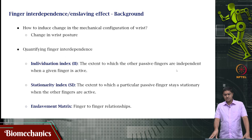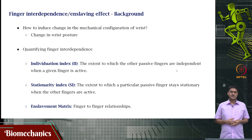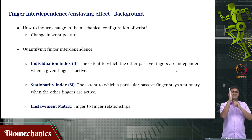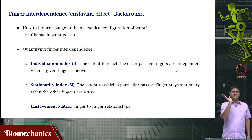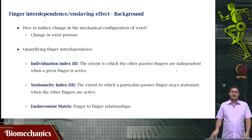How do you cause a change in the mechanics of the wrist — essentially, how do you stretch the flexors or extensors? Simply change the wrist posture. You can perform finger movements in a neutral posture, or keep the wrist extended and perform them, or keep it flexed and perform them. In some previous studies by the excellent research group of Professor Mark Schieber, it has been proposed that finger interdependence in the kinematic space can be defined using two indices.